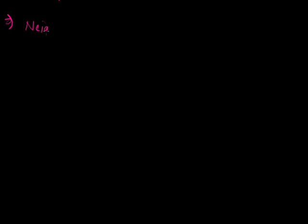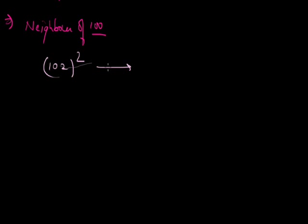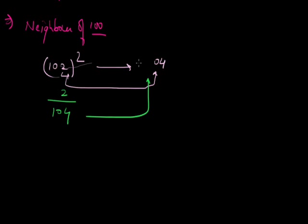Now let's talk about squaring numbers which are neighbors of 100 — numbers lying around 100. Let's say 102 squared. Here we take base 100. We square the unit part (2) and write it in 2-digit form: 04. Then we add 102 plus 2 to get 104. So 102 squared equals 10404.